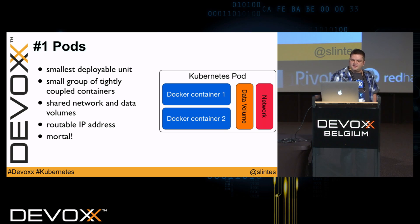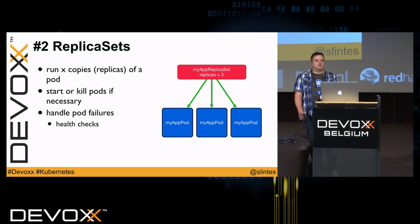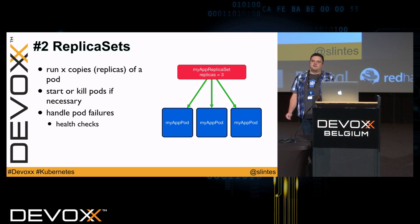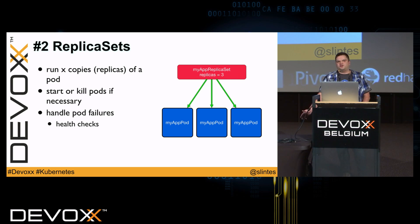You don't create pods yourself — pods are created by replica sets. Replica sets are intended for running a specified number of copies, called replicas, of your pod. If there are fewer pods running, a replica set will start a new pod; if there are too many, it will kill pods. Replica sets also use health checks to verify if a pod is running fine — if not, it will be restarted. Health checks can be basic checks if the Docker container is still running, or some application-defined health checks.